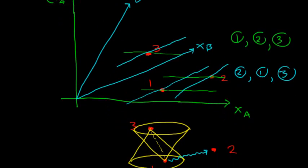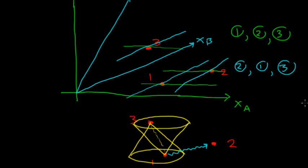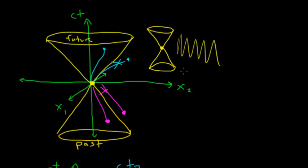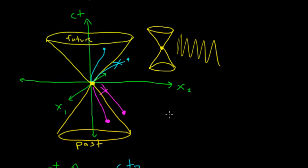Hopefully this gives you an idea of an object's future and an object's past, and how the rest of the space out here is sometimes called causally disconnected from this point. I can't affect anything out there, and I can't be affected by anything out there, and all observers will agree on that.